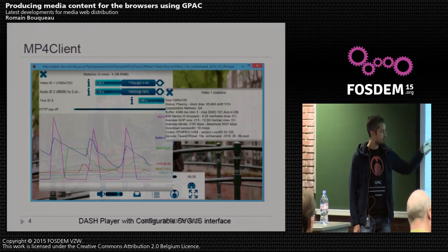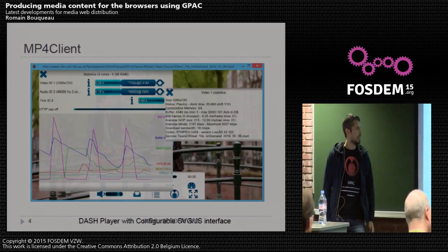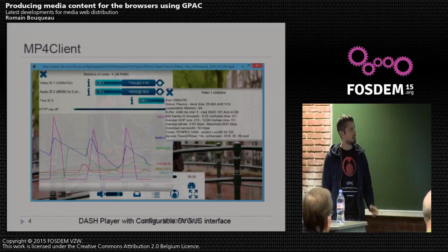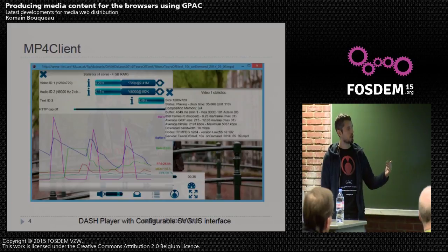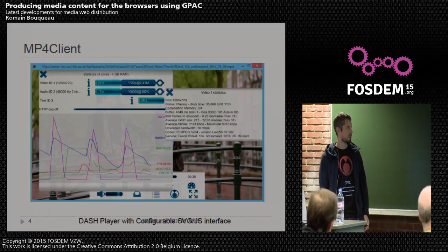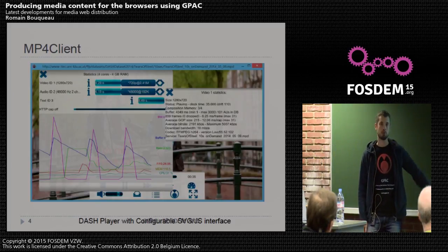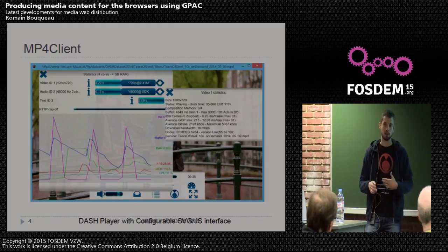The GPAC player is interactive — its interface is made using SVG — and it provides many detailed statistics that are really useful. That's one reason many industry actors chose to work with us when they needed to make demonstrations like 4K and 10-bit demonstrations using the latest codecs, because they could get all the statistics and limit the bandwidth artificially.